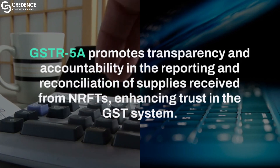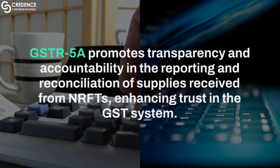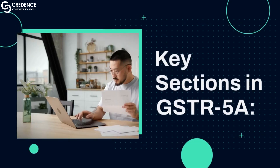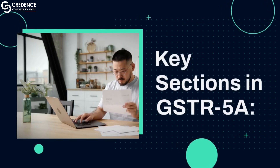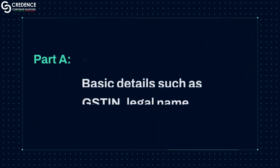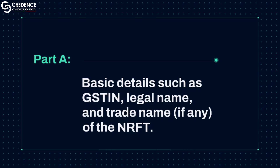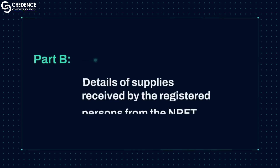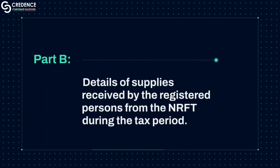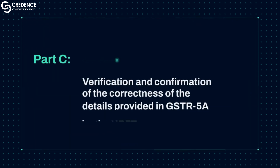Key Sections in GSTR-5A: Part A covers basic details such as GST, Legal Name, and Trade Name (if any) of the NRFT. Part B covers details of supplies received by the registered persons from the NRFT during the tax period. Part C covers verification and confirmation of the correctness of the details provided in GSTR-5A by the NRFT.